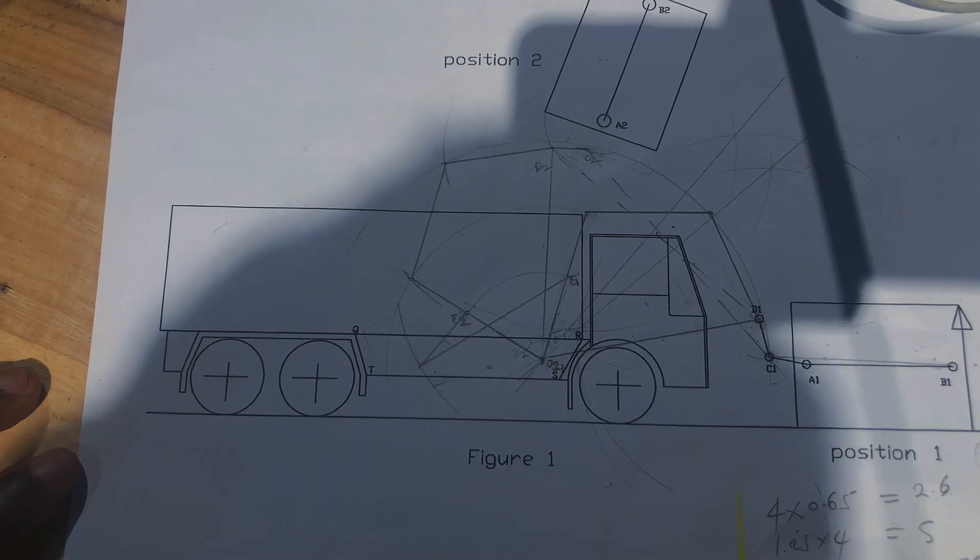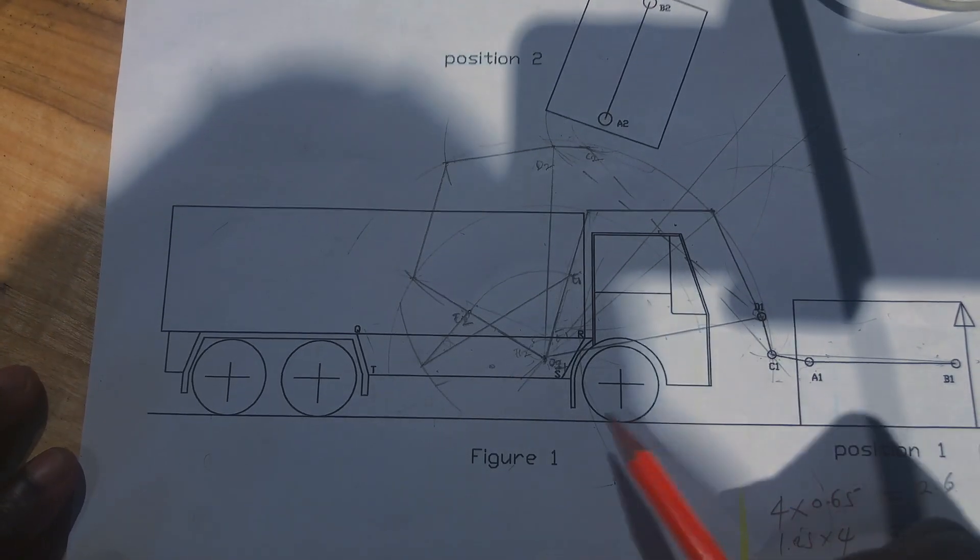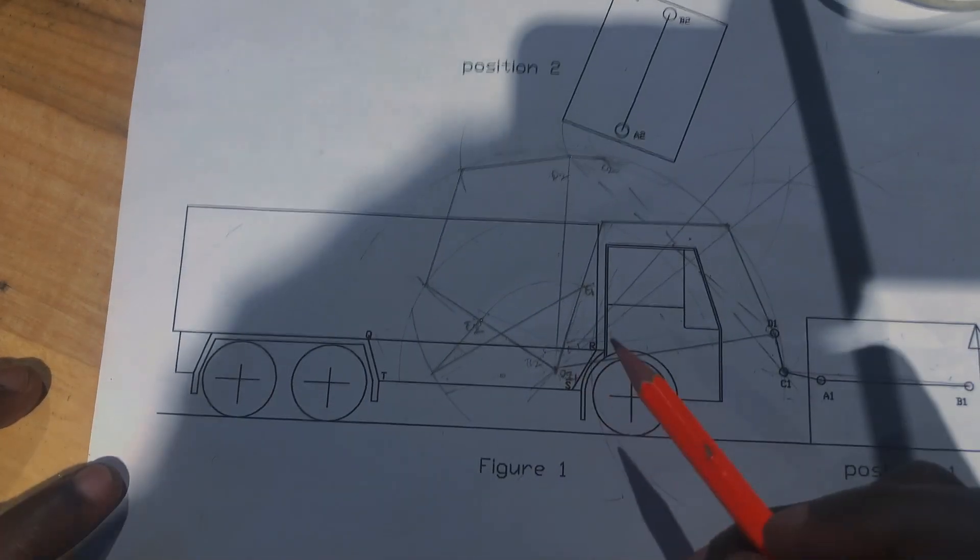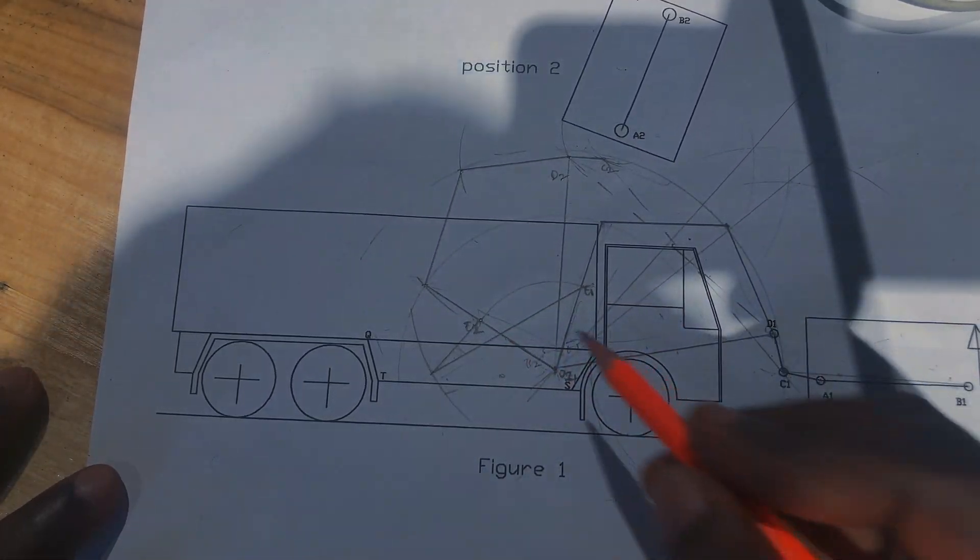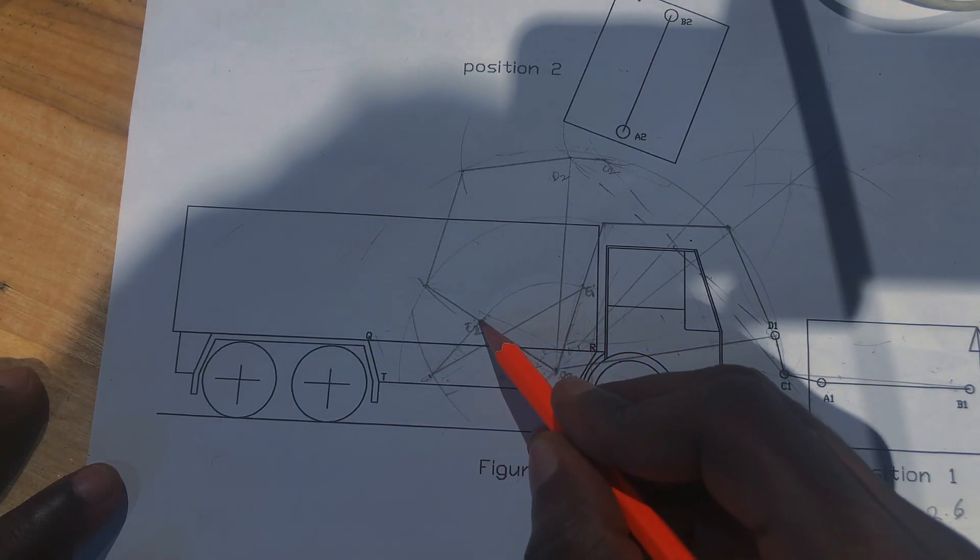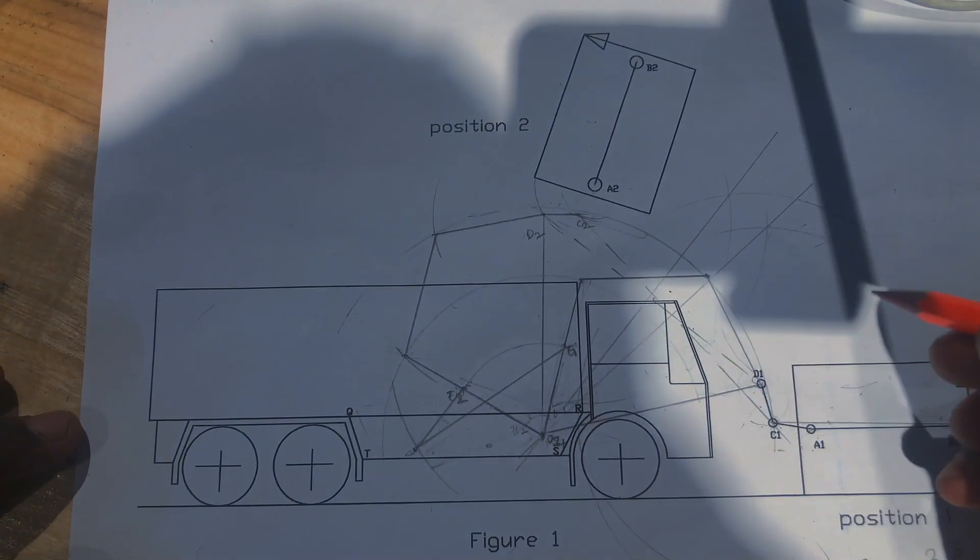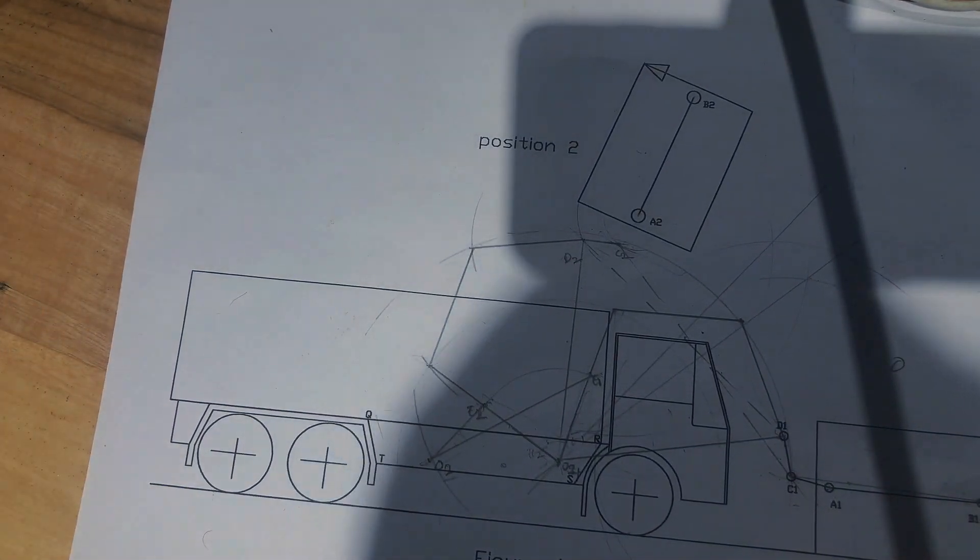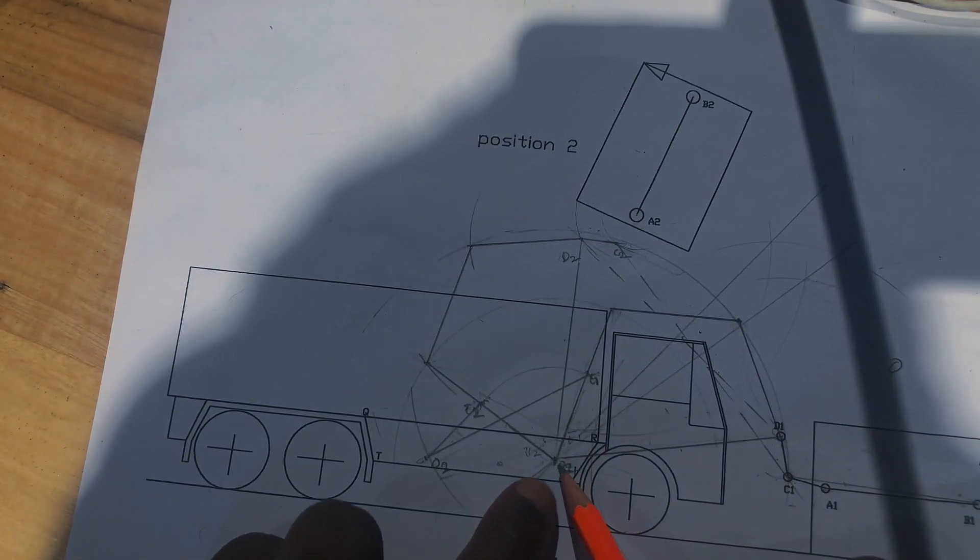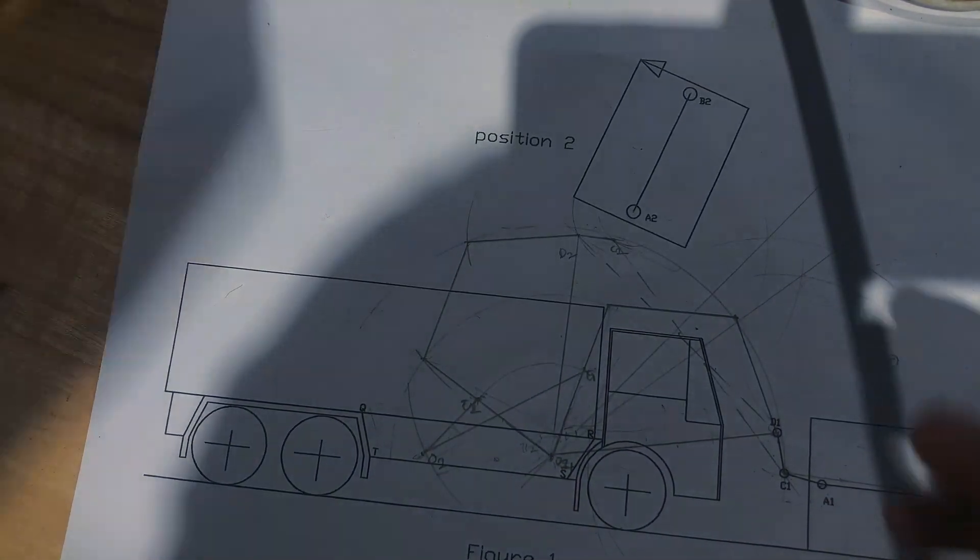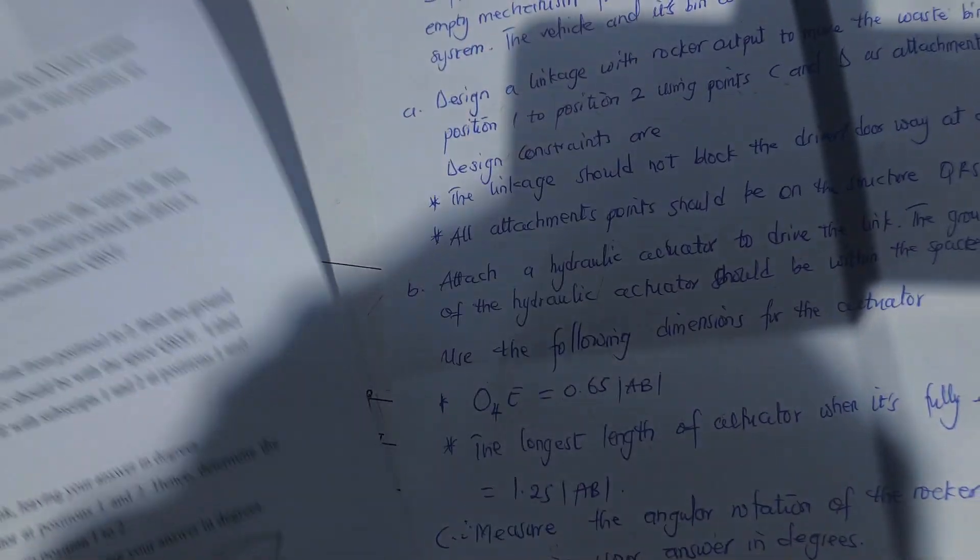We'll be done with the actuator. The next thing is to measure the extension. So the extension, you measure the length from here to here which was five centimeters, and then you measure from here to here. Let's label this as O2. I'm using two because at the same time, this one is the one we were doing in class and this is one of the assignment questions.